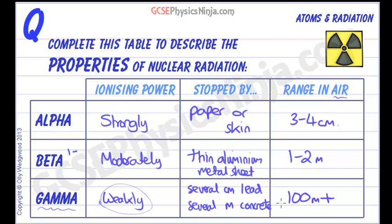Make sure you can describe the properties of alpha, beta, and gamma using this table, and be able to explain why alpha particles are more ionizing than beta, and beta particles are more ionizing than gamma.